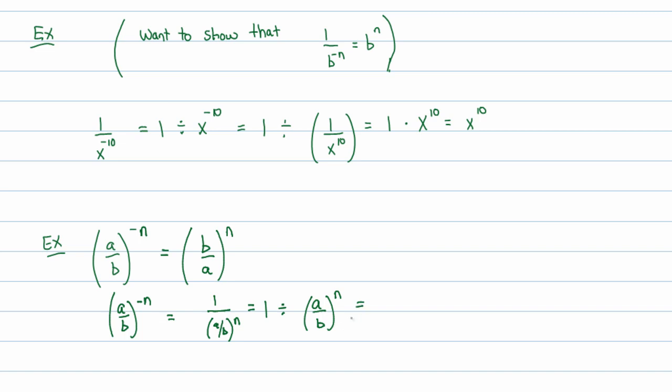That's going to equal 1 divided by a over b to the nth power. Now I'm going to slightly change this a little bit. I'm going to say that's 1 divided by a to the nth over b to the nth, because we have a theorem that says we can do that. And then change that division to multiplication by flipping the back end. So it's b to the nth over a to the nth. And 1 times anything is just that object. So it's just b to the nth over a to the nth. And finally, that's just going to be b over a to the nth power.